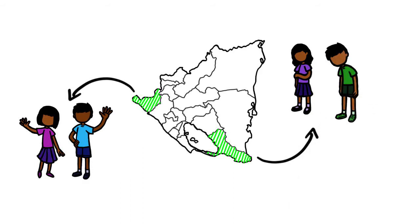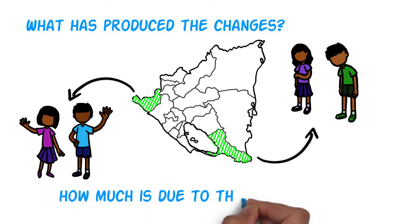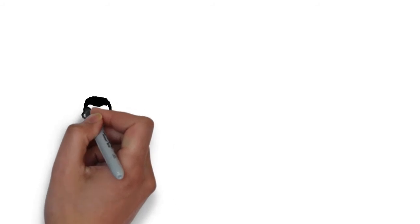All impact evaluations have to address the issue of cause and effect. What has produced the changes that have been observed? And how much is due to the intervention? But how can Carlos do that in this impact evaluation?